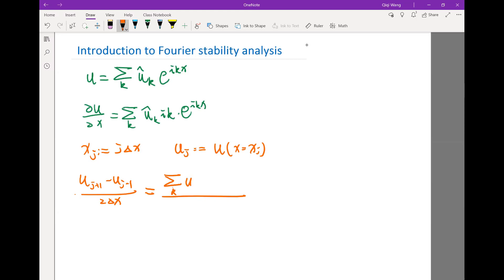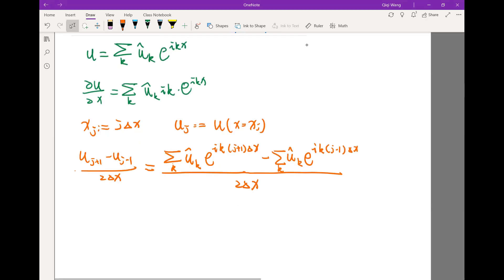So u head of k is the same, and e to the ik, now j plus 1 delta x. So that is my u of j plus 1 according to the definition. u of j minus 1 according to the same definition is exactly the same except for I will replace my j plus 1 with j minus 1. The whole thing divided by 2 delta x.